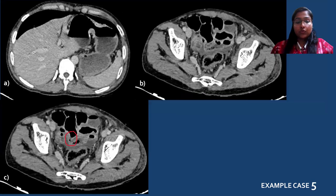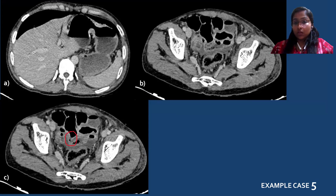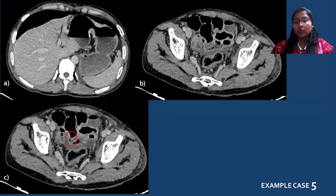This was a case of a 45-year-old male who presented with blunt abdominal trauma. Free air can be seen with a collection with air foci along ileal loops. Further, a rent or discontinuity could be visualized, which was confirmed intraoperatively.